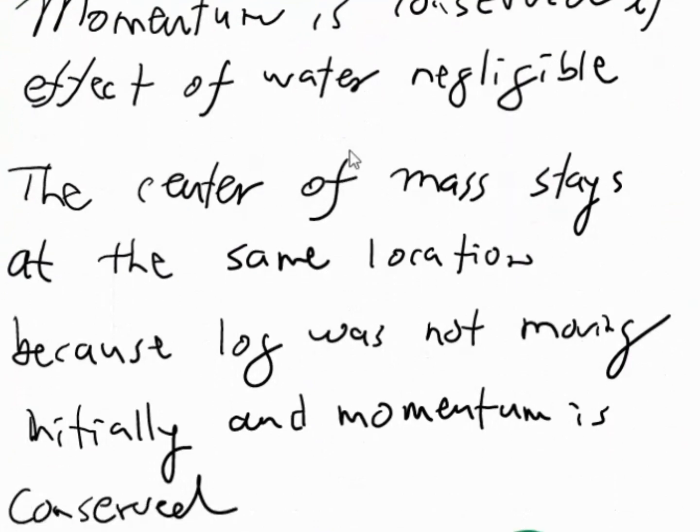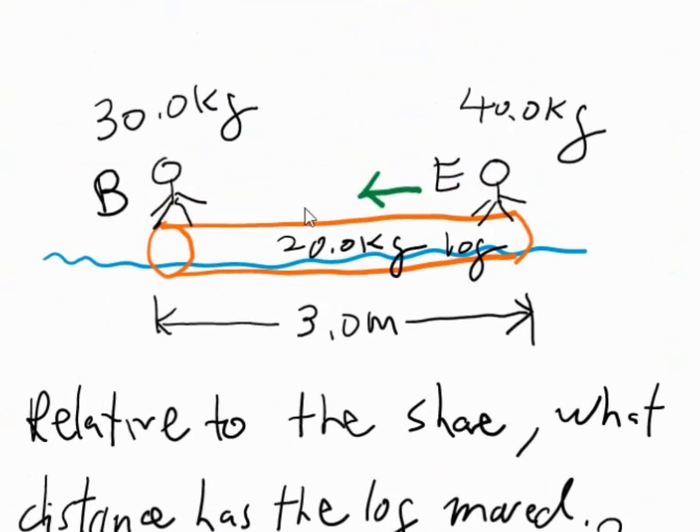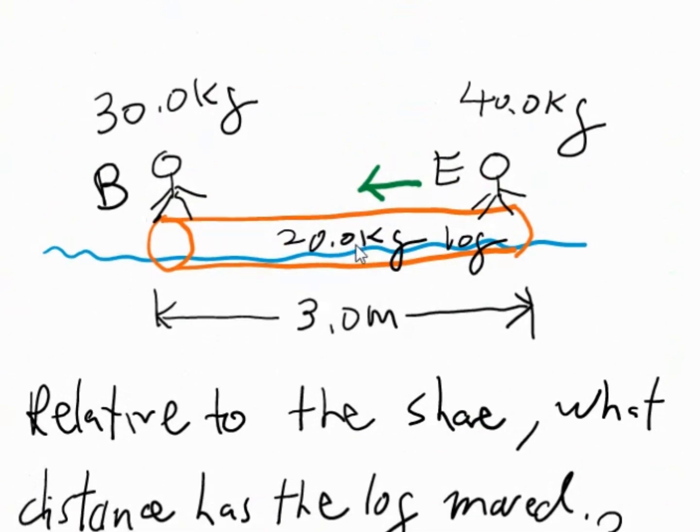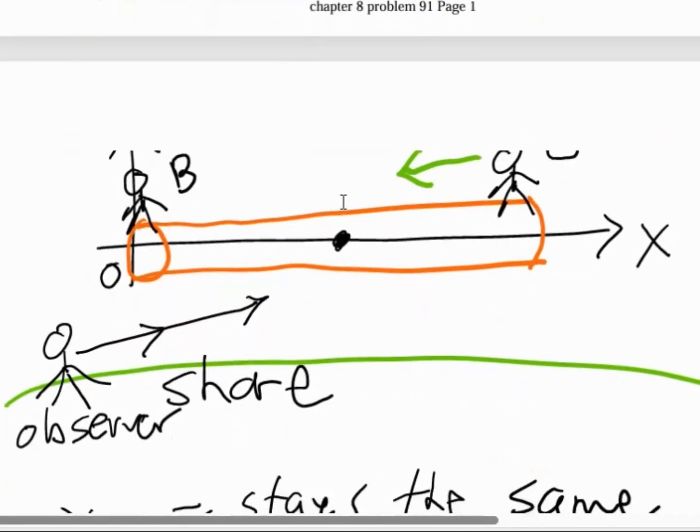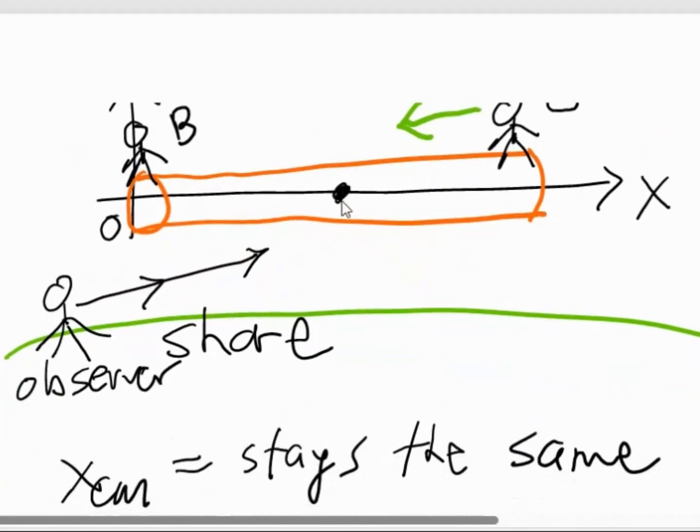In addition, the center of mass stays the same at the same location because the log was not moving initially and momentum is conserved. So the center of mass position of the whole system of the two persons plus the log, the center of mass location stays the same relative to somebody observing on the shore.